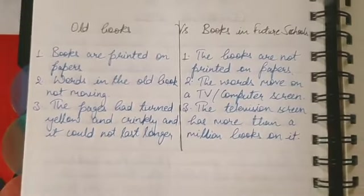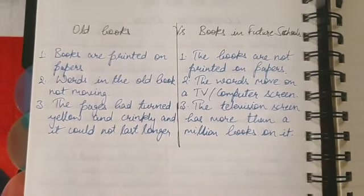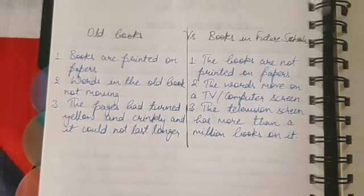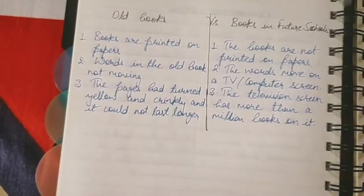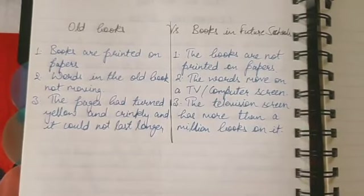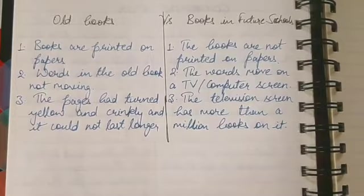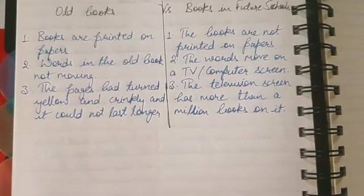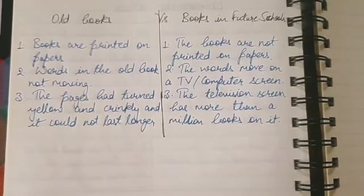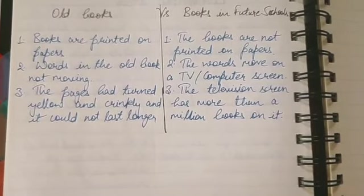Now the last comparison is between old books and books in future schools. In old books, books are printed on papers — as we all have read our chapters and subjects from printed paper books. Whereas in future schools, books are not printed on papers. Also, in old books the words are not moving, as we can see in any textbook — the words stay fixed on the pages.